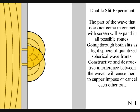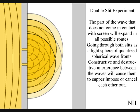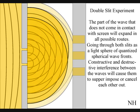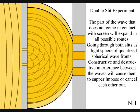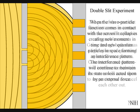Interference between the waves will cause them to superimpose or cancel throughout. When these waves come in contact with the screen, they will collapse creating quantum particles in space and time in the shape of an interference pattern. When the observer turns on a detector to determine which slit a photon passes through, the interference pattern will collapse.